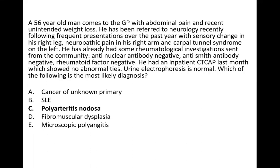With polyarteritis nodosa, the features here include abdominal pain. It is a vasculitis affecting many different areas of the body, particularly the abdomen — narrowing of the arteries can cause mesenteric ischemia, which explains the abdominal pain. You also have mononeuritis multiplex and negative antibodies. The key thing about polyarteritis nodosa is that it is a vasculitis with no positive antibodies, whereas most other vasculitides will have them.